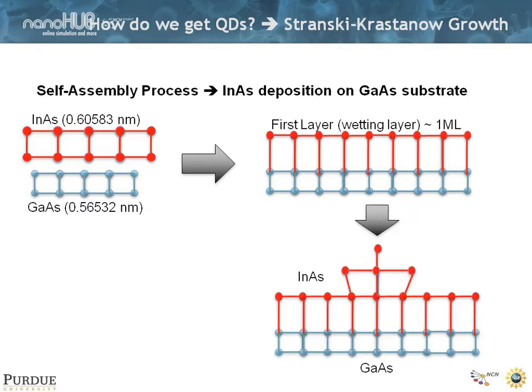Now after a couple of critical monolayers the indium arsenide says I've had it, I don't fit, I'm going to clump up. And interestingly it clumps up into homogeneous crystal clumps, meaning without defects, it clumps up very nicely. Of course in this pictorial diagram this is a tiny quantum dot. In reality they are a little bit larger, like 200,000 atoms or so.